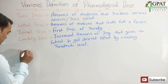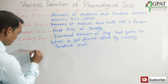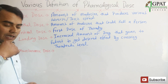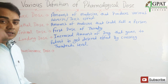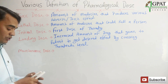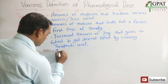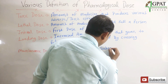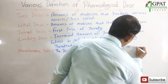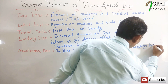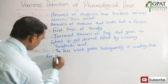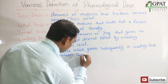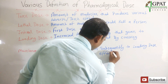Next, maintenance dose. What is the maintenance dose? When we have given the loading dose, then after the half-life of the drug, the amount of drug in the body decreases. To maintain that therapeutic level, we use the maintenance dose — the dose given subsequently after the loading dose for maintaining the therapeutic effect.